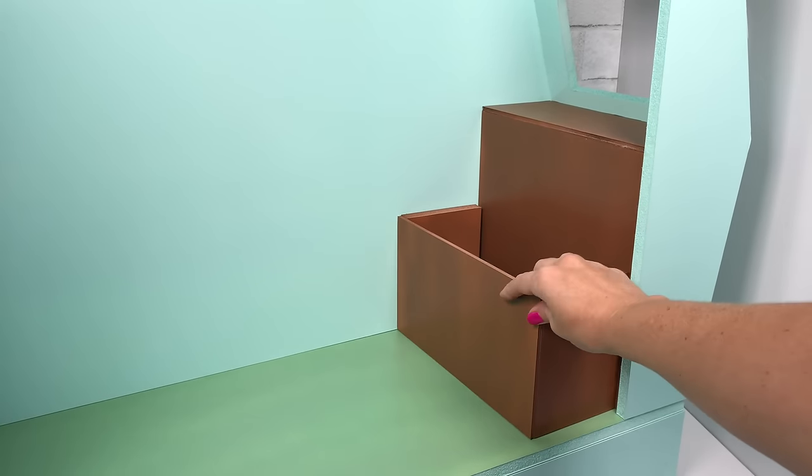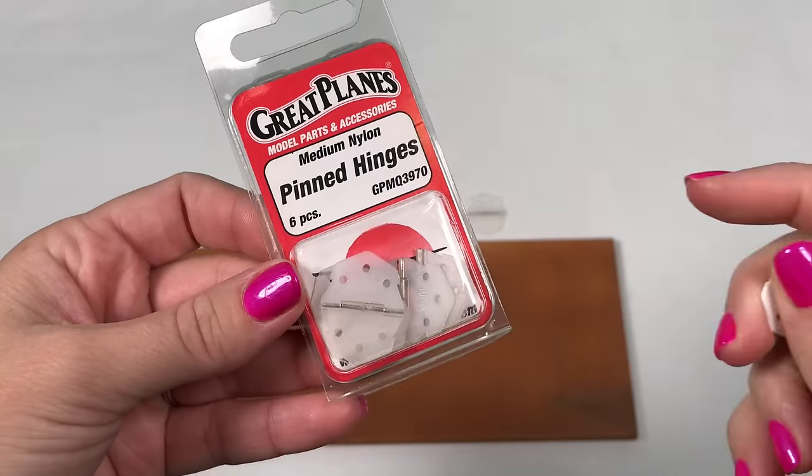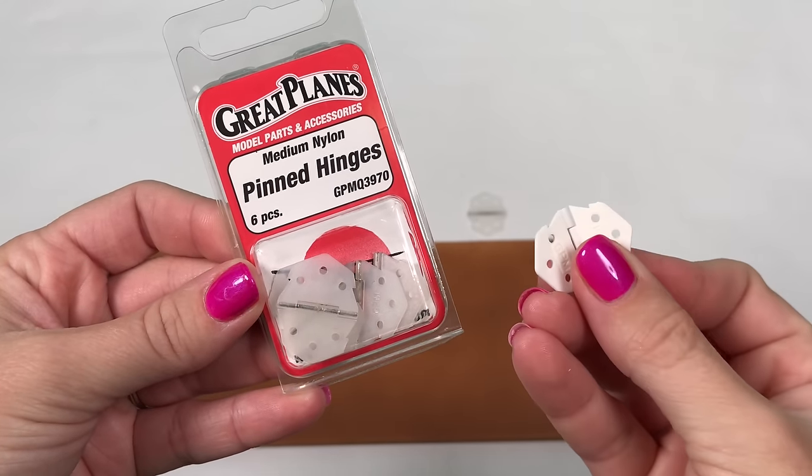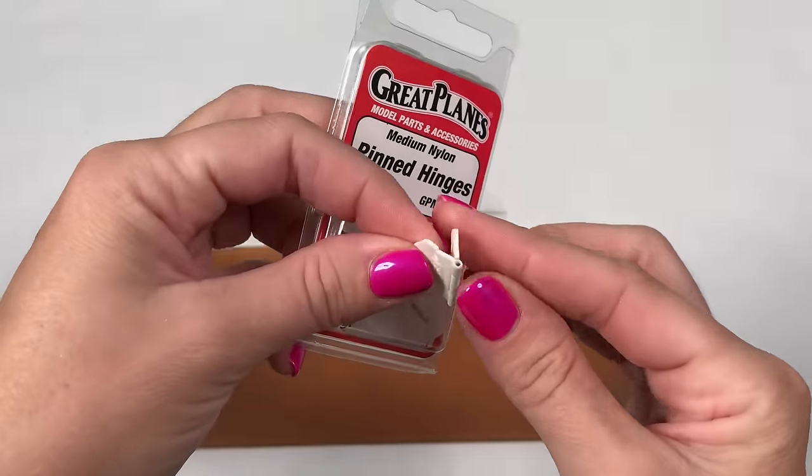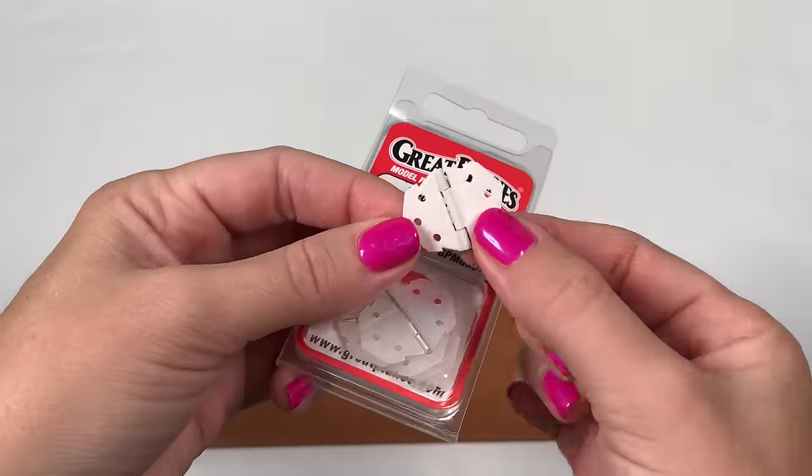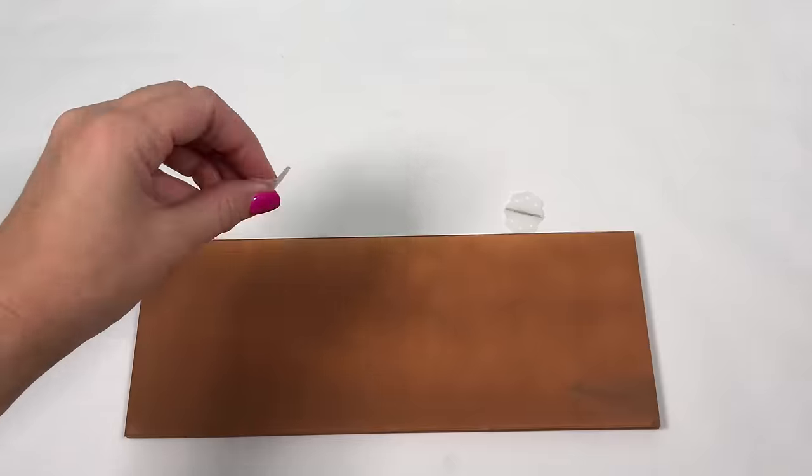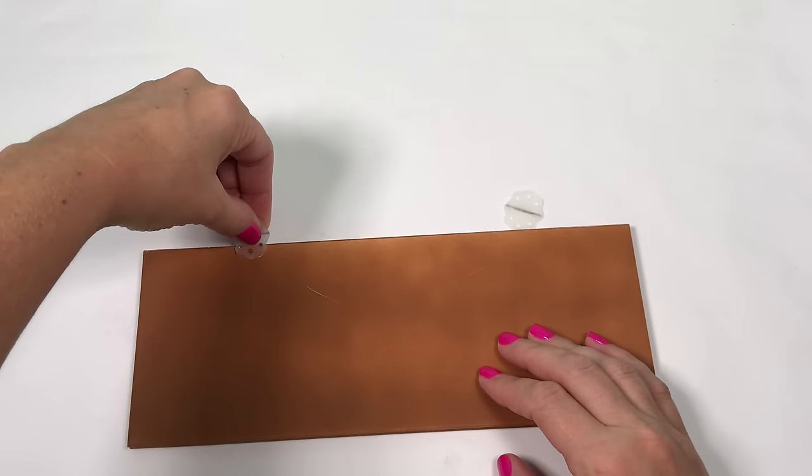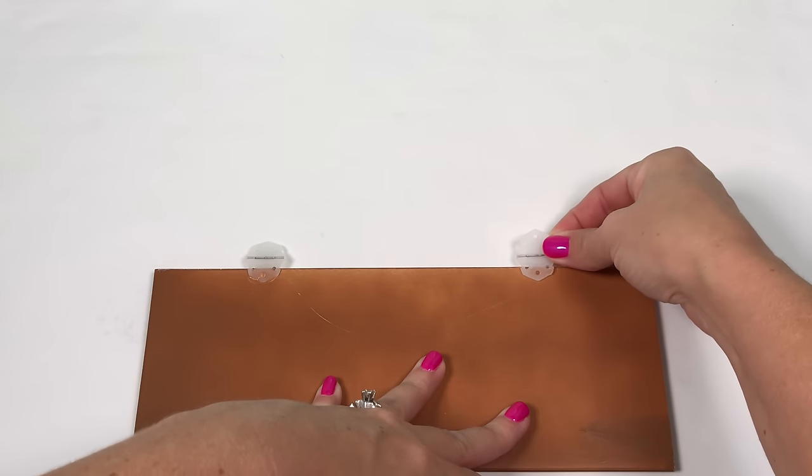You can glue the top on to create a regular bench or you can use these nylon hinges to create a storage bench so the top will open and close. These hinges work great with foam board and for light play hot glue will work. For heavier play you'll want Gorilla Glue or E6000 Glue. Apply glue to your hinge and place it on the bottom side of your storage lid. Make sure both of your hinges are placed evenly.